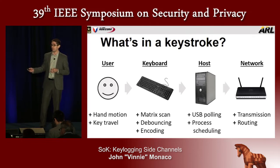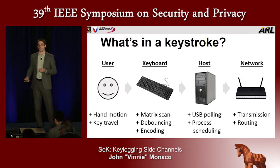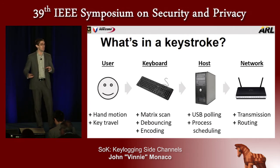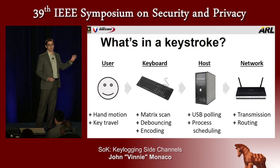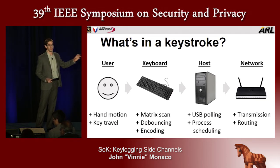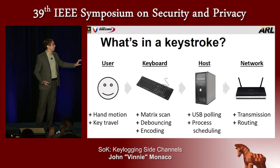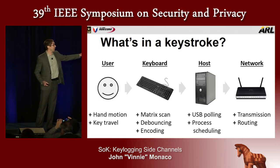Finally, if we consider a web application where the role of the client is to relay user input events back to the server, then from the perspective of the server or another host on the network we have the usual delays associated with the network. Looking at this complete picture, a keylogging side channel by definition is some method to determine what a user types by leveraging an unintended information source.